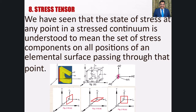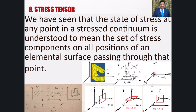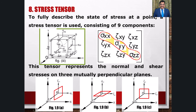Stress Tensor - हमने देखा है कि किसी stressed continuum में किसी भी point पर stress की state का मतलब उस point से गुजरने वाले किसी भी elemental surface पर stress components का set होता है। Fig. 1.9 में हमने surface element की तीन अलग-अलग positions को reference plane के parallel दिखाया था और संबंधित stress components को भी दिखाया था। जो nine stress components हमने प्राप्त किए हैं उन्हें एक अलग तरीके से represent किया जाता है जैसा कि fig 1.19 में दिखाया गया है।